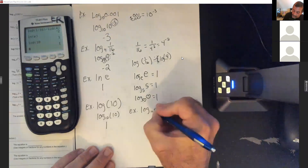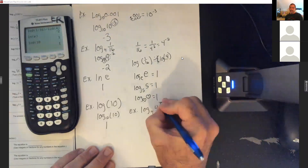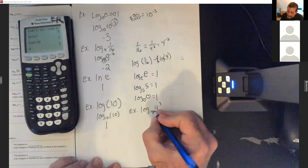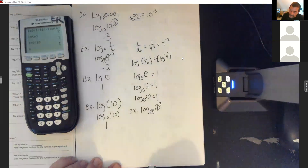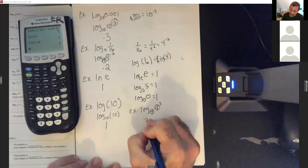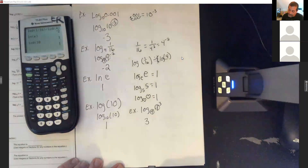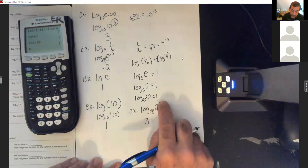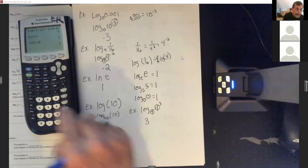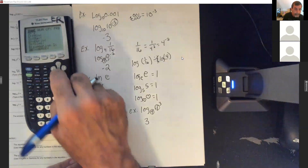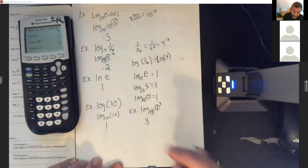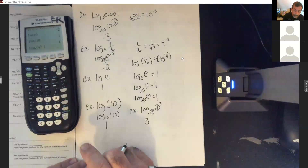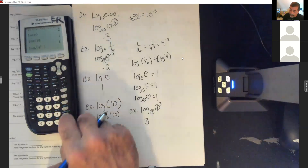Log base 4 of 4 to the third: the base matches the result, so the answer has to be that exponent — 3. For change of base: log(4³) divided by log(4). Or if you have log base, go to math, select log base, put in 4, then enter 4 to the third power. You should get 3.